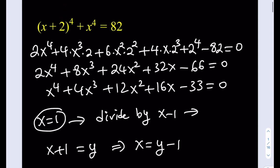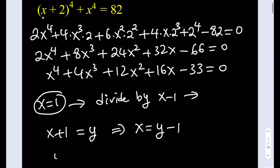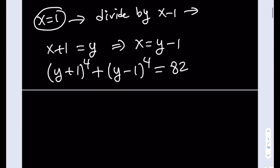If x is equal to y minus 1 here, then I'm going to be getting y plus 1 to the fourth power. And from the other expression, I'm going to get y minus 1 to the fourth power. And the sum is going to equal 82. Awesome. Now we've got symmetry, right? Yes, symmetry is beautiful.